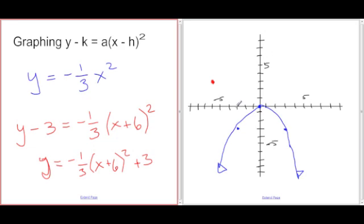Let's try negative 3. Negative 3 plus 6, oh well that is 3 squared is 9 times negative one-third is negative 3 plus 3 gives us 0. So that's pretty nice right there.